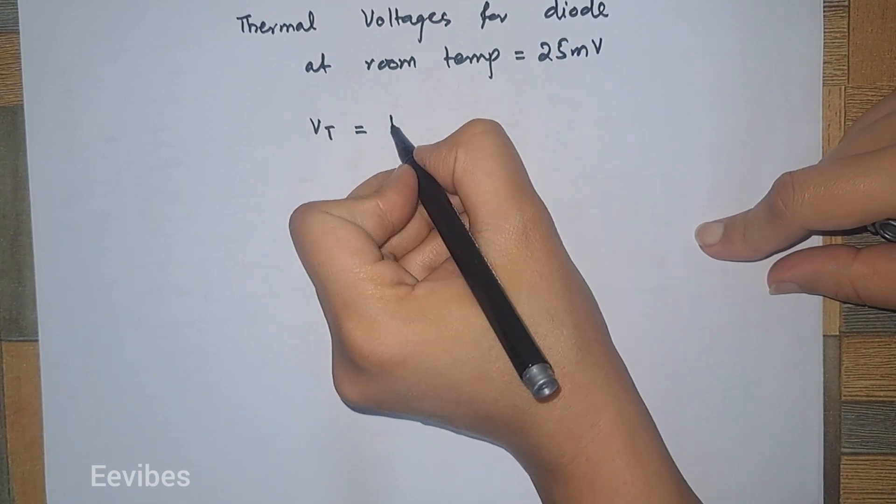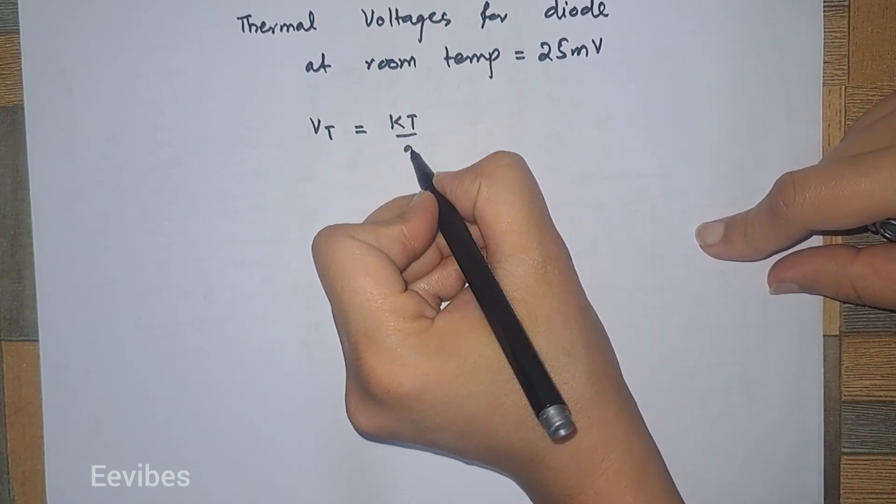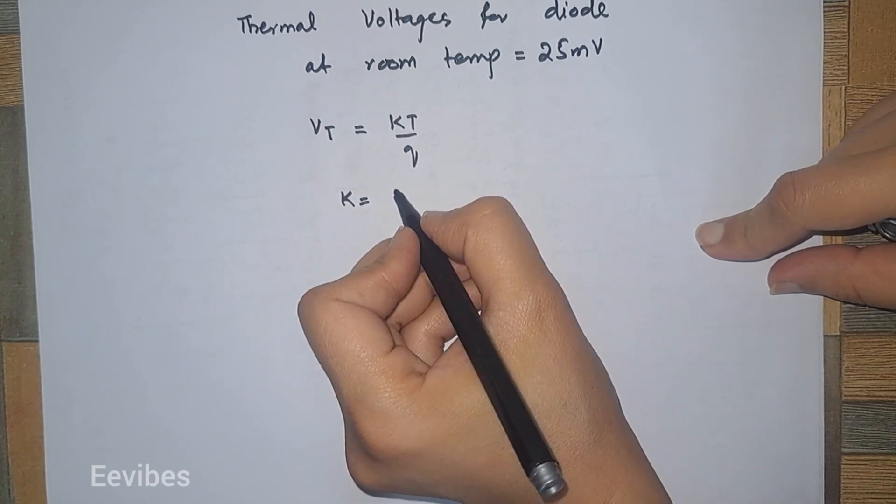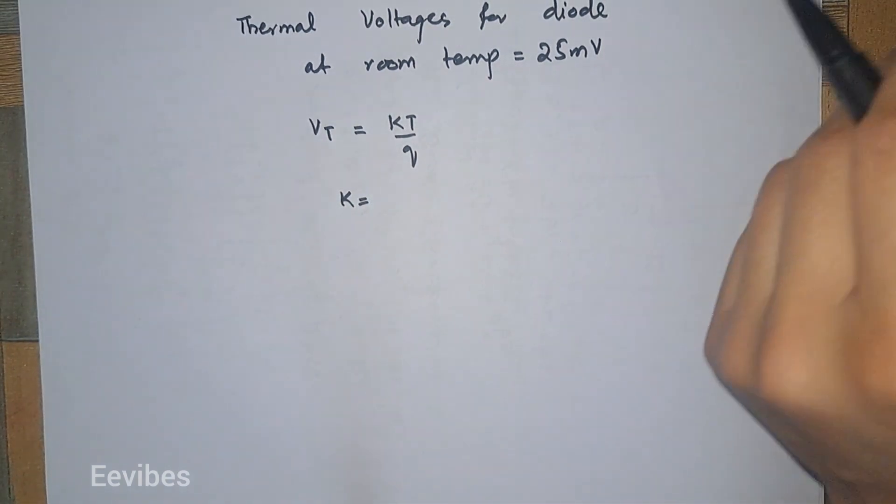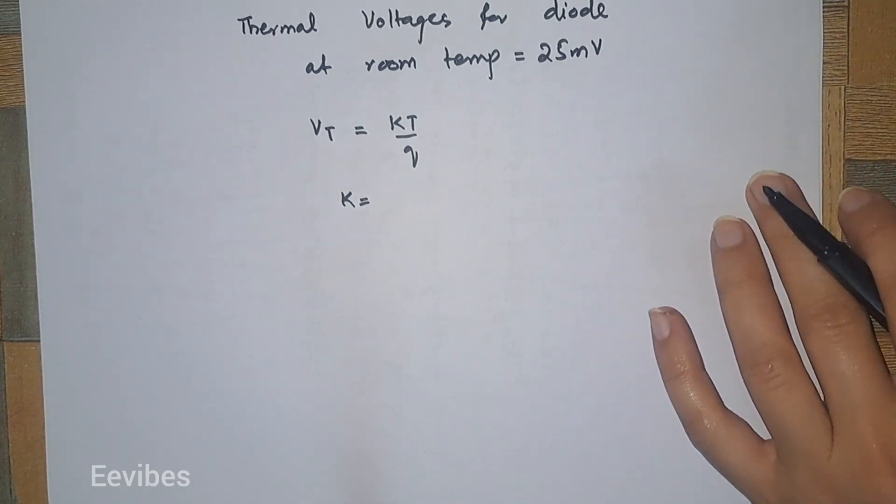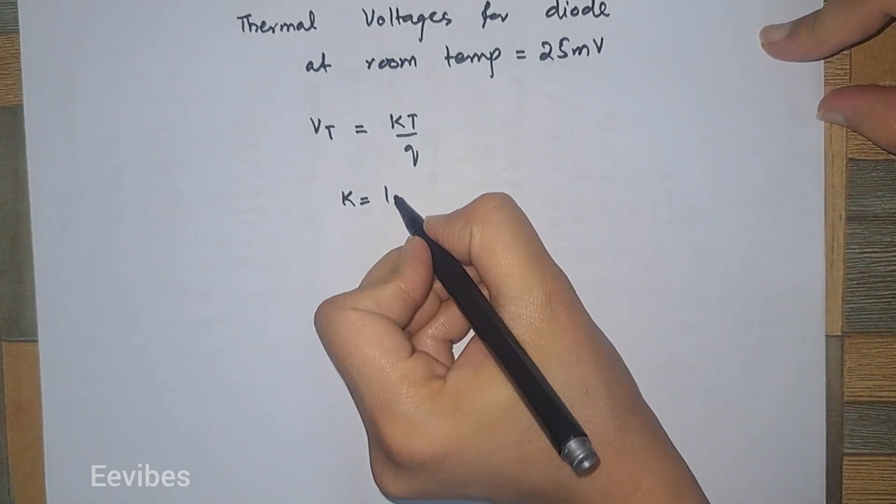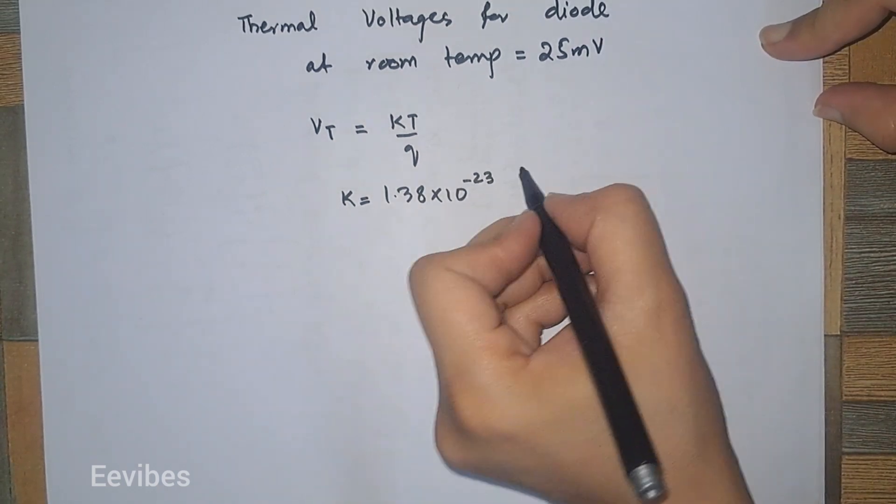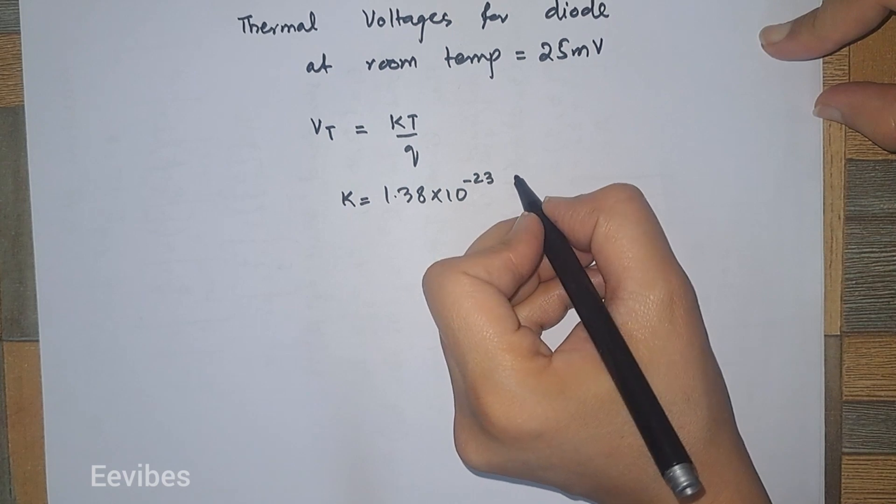is equal to KT over q, where k is the Boltzmann constant which is equal to 1.38 into 10 raised to power minus 23, and its unit is joules per Kelvin.